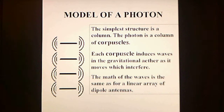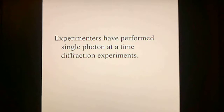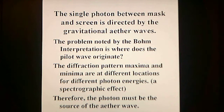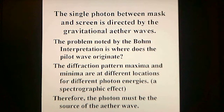The math of the waves is the same as for a linear array of dipole antennas. Experimenters have performed single-photon-at-a-time diffraction experiments. The single photon between mask and screen is directed by the gravitational ether waves. The problem noted by the Bohm interpretation is: where does the pilot wave originate? The diffraction pattern maxima and minima are at different locations for different photon energies — a spectrographic effect. Therefore, the photon must be the source of the ether wave.